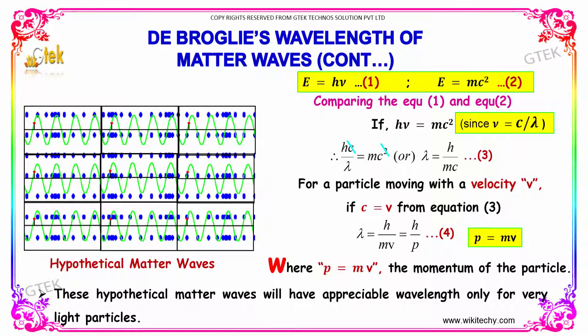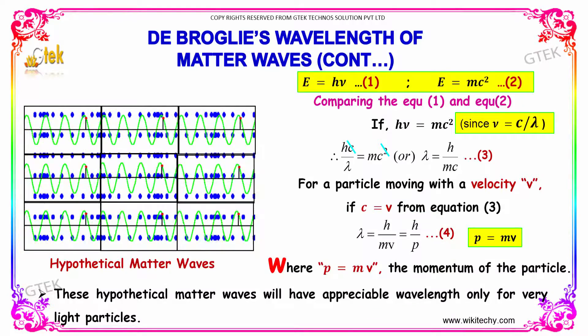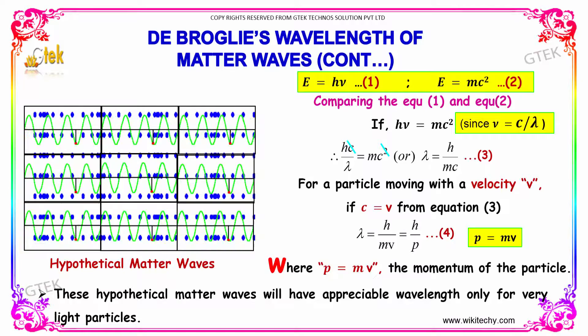For a particle moving with velocity v, if c = v in the equation, we get λ = h/mv. Since p = mv, λ = h/p, where p is the momentum of the particle.